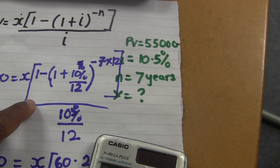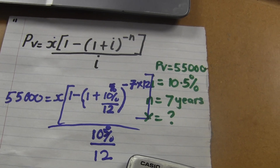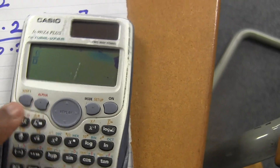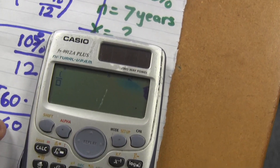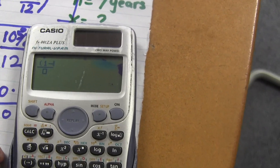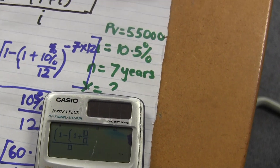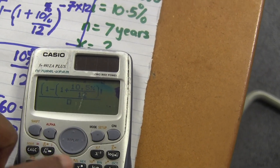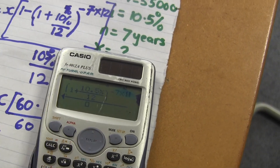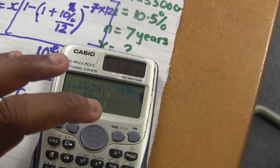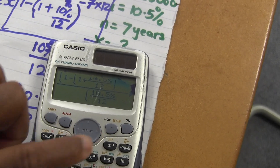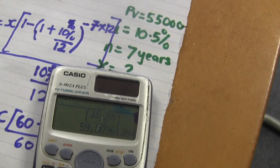Okay, plugging in 10.5% now. I go back to the fraction mode: the top is one minus, open a bracket, one plus the fraction of 10.5% over 12, close, raised to the power of negative seven times twelve. Then the bottom is 10.5% over 12. After computing, the answer is 59.30.